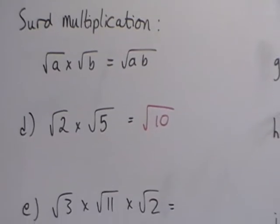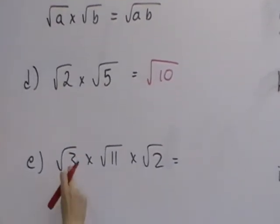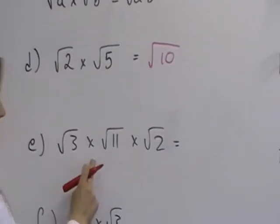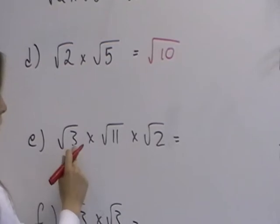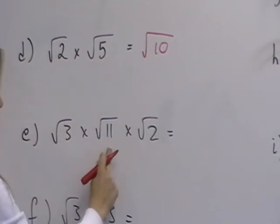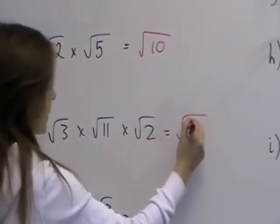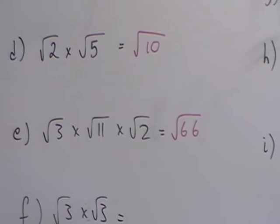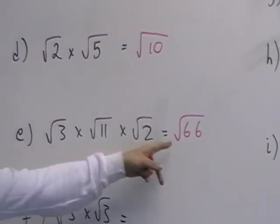When you move on to this one, again we've got three surds, they're all multiplying together, so it becomes the square root of 3 times 11 times by 2. So 3 times 11 is 33, times 2 is root 66. And for now we're just going to leave it in this form.